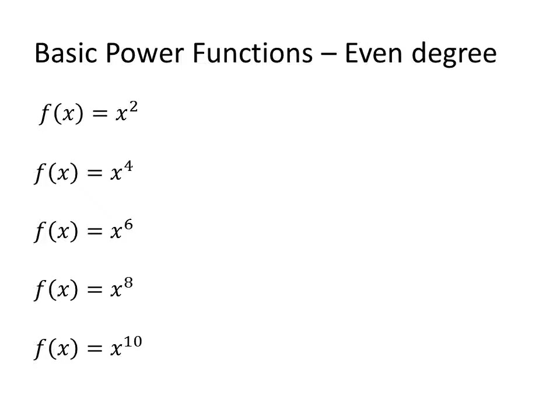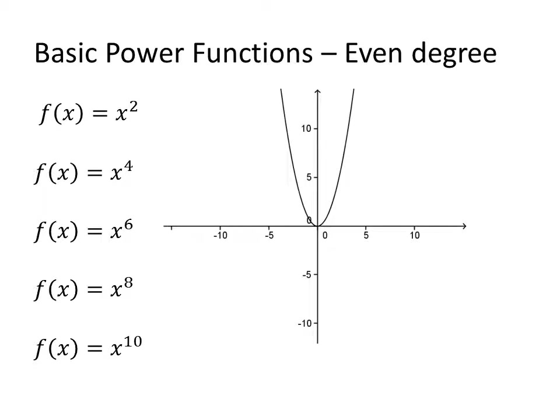Looking at just the even-degreed functions: x squared intersects the origin. x to the fourth power looks a lot like x squared except it's a lot steeper past 1. x to the sixth power is even steeper than x to the fourth. x to the eighth and x to the tenth are steeper yet. However, the overall shape is still the same — any even-degreed function is going to have the basic shape of a parabola, just more intense.